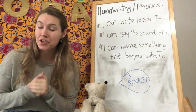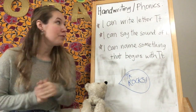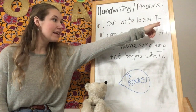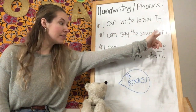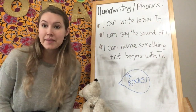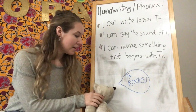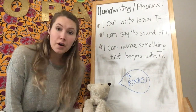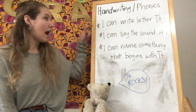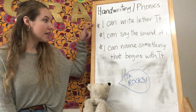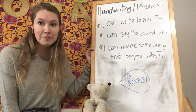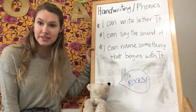You guys are going to be showing me that you know how to write letter T, to say the sound of T, and to name something that begins with T. Those are our three objectives for today: I can write letter T, I can say the sound of T, and I can name something that begins with T.